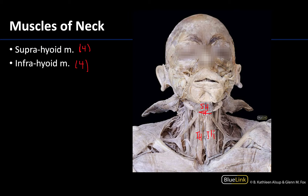The suprahyoid muscles play a role in supporting the hyoid, and when they contract they can elevate the hyoid. You can see they also form the floor of the mouth. The infrahyoid muscles are a bit longer and strap-like — that's why you often hear them referred to as the strap muscles — and they play a role in depressing the hyoid, moving it inferiorly.